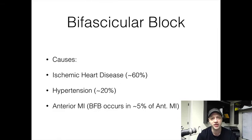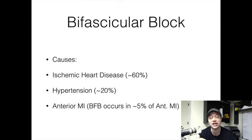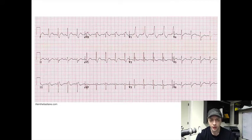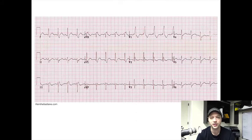About 5% of the patients experiencing an anterior MI — that's ST elevations of greater than one millimeter or more in leads V3 and V4 — may also be experiencing a bifascicular block. With these patients, when you look at your EKG, you're going to see these really odd-looking QRS complexes, something we're not really used to seeing.